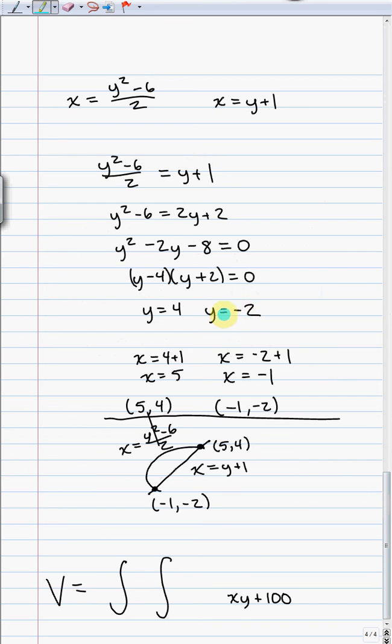We can plug those back in to either one of these equations. I choose that x is equal to y plus 1 because it's easier to solve, and that tells us that x is equal to 5 when y is equal to 4, and x is equal to negative 1 when y is equal to negative 2.